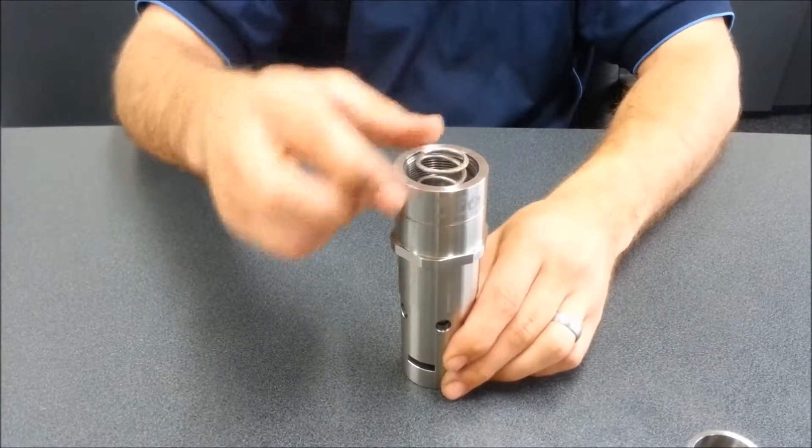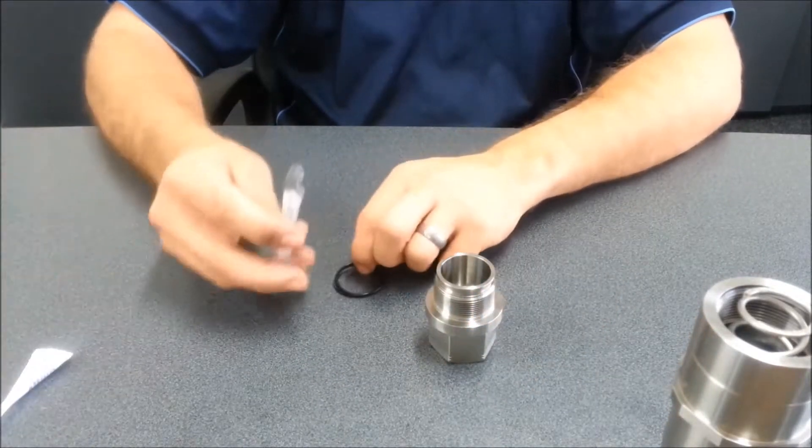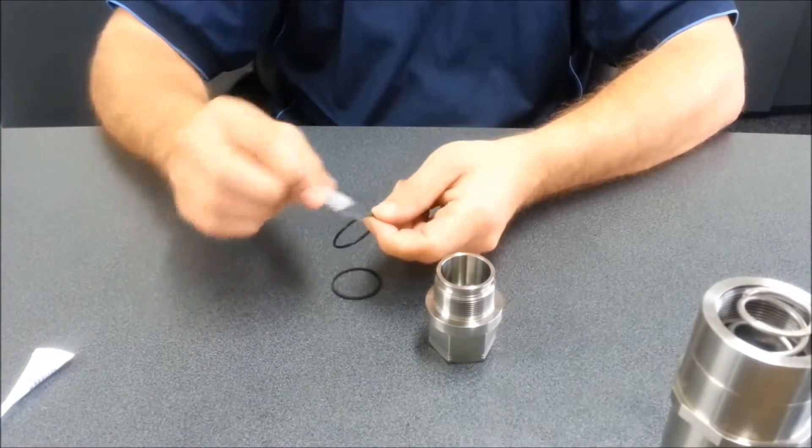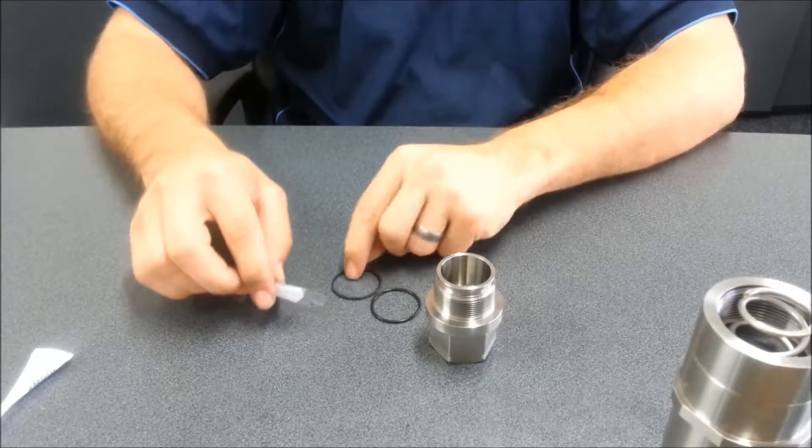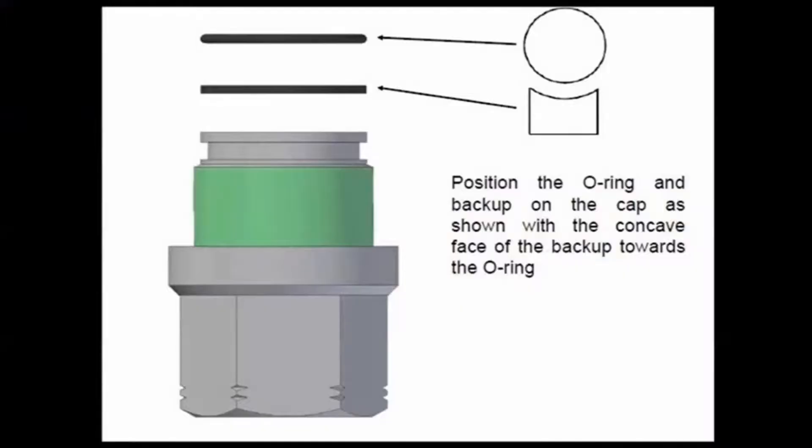Install the cap spring. Apply grease to the o-ring and backup. Install the backup first in the o-ring as shown in this image. Make sure that the curve in the backup faces the o-ring.